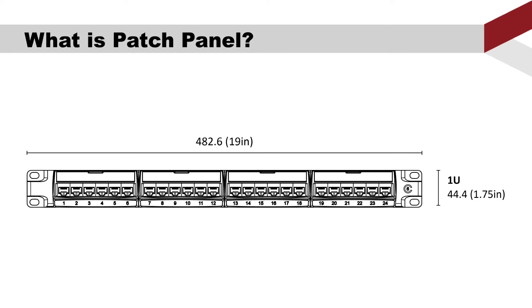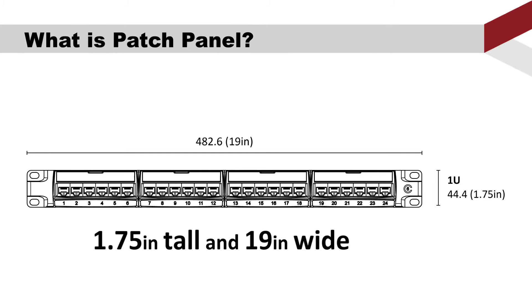The patch panel is a typical component of structural wiring. The dimensions of a regular patch panel are 1.75 inches tall, which is 1 rack unit height, and it is 19 inches wide.